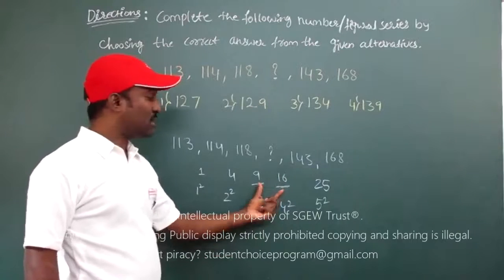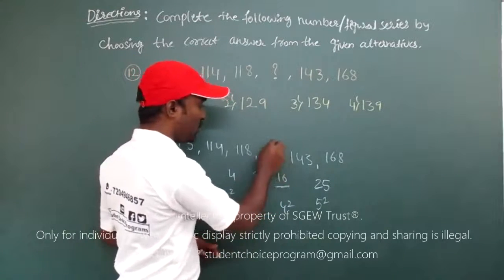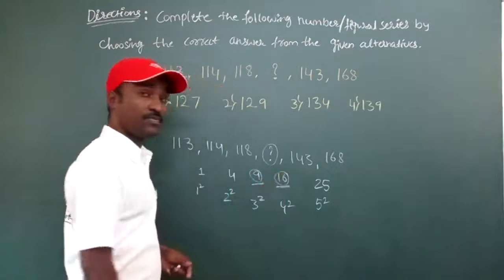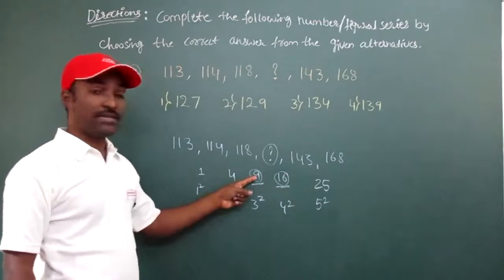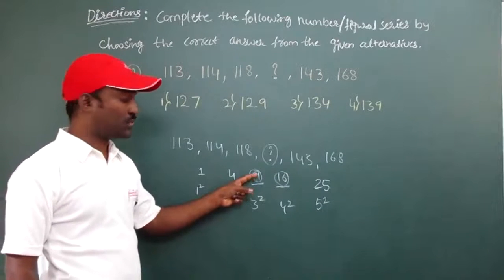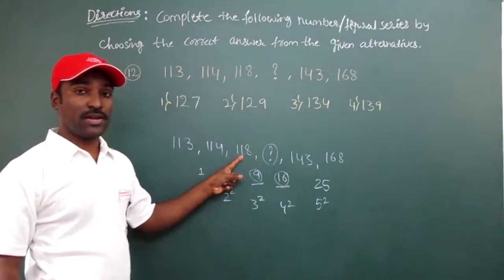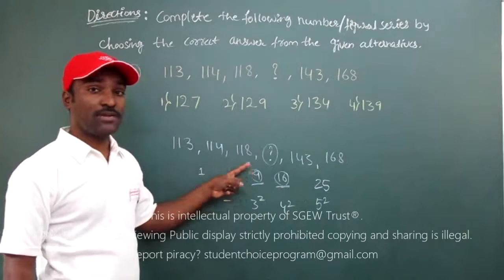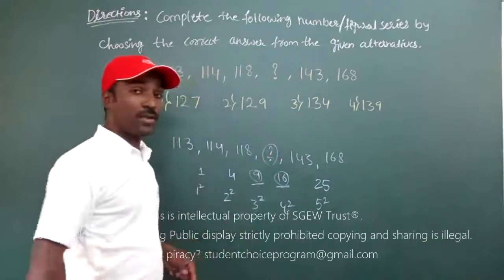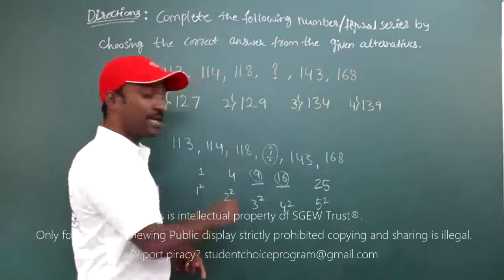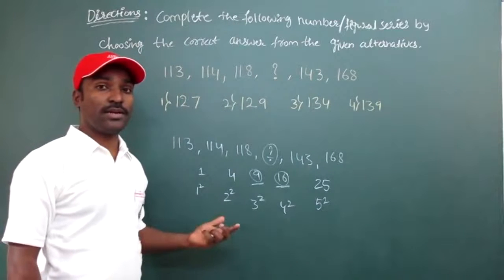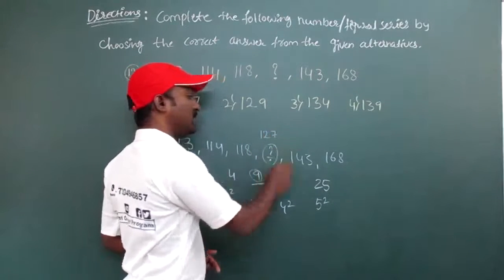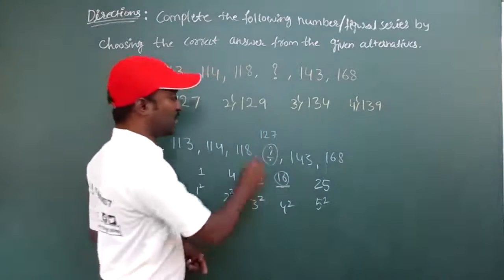The next step is to get these numbers, what I have to do? I have to use these numbers. How I can use this 9? Yes, I have to use this 9 with 118. What I have to do? I have to add 118 plus 9. That will give me this missing number. So what is 118 plus 9? 118 plus 9 will be, yes, it is 127. So this is my missing number.